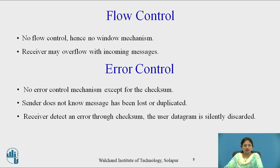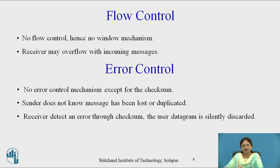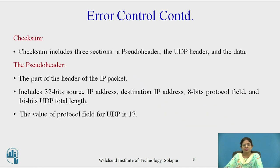Regarding error control: UDP does not provide error control except for the checksum. The sender does not know if a message has been lost or duplicated. The receiver detects an error through a checksum, and the user datagram is simply discarded. Let's see checksum in detail.